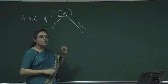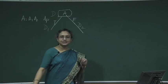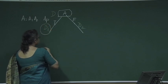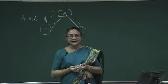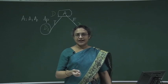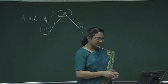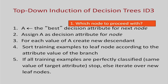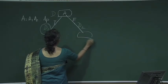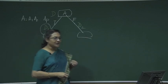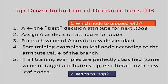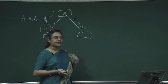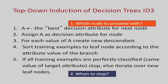D1 will contain those examples for which A equals true, and D2 will contain those for which A equals false. At this point, when we look at D1, we will again have to decide whether to stop growing the decision tree or to select an attribute and recursively go on. The basic outline of the algorithm is given in the slide. There are two decisions we have to take: which open node to start with, and whether to stop or grow the tree at that node. If we grow the tree, we have to decide which attribute to split on.